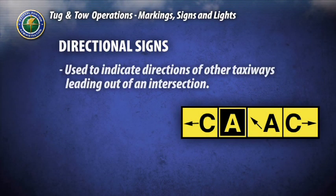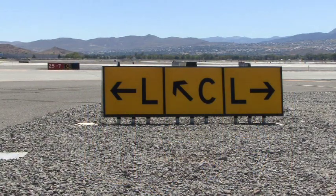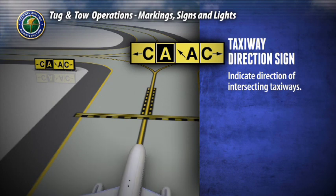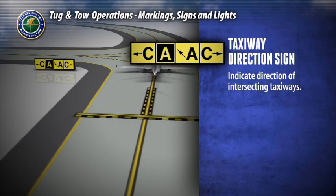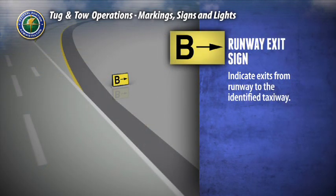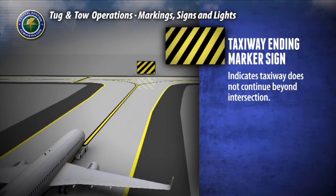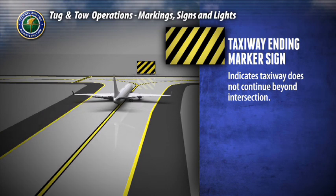Directional signs are used to indicate directions of other taxiways leading out of an intersection. These signs incorporate black inscriptions on yellow backgrounds and always contain arrows. Taxiway direction signs indicate the direction of intersecting taxiways — for example, Taxiway Charlie is to the left and right, and Alpha, the taxiway on which you are currently located, continues ahead and to the left. Runway exit signs are used on runways to indicate exits to the identified taxiway. The taxiway ending marker sign indicates that the taxiway does not continue beyond the intersection and will be located on the far side of the intersection.